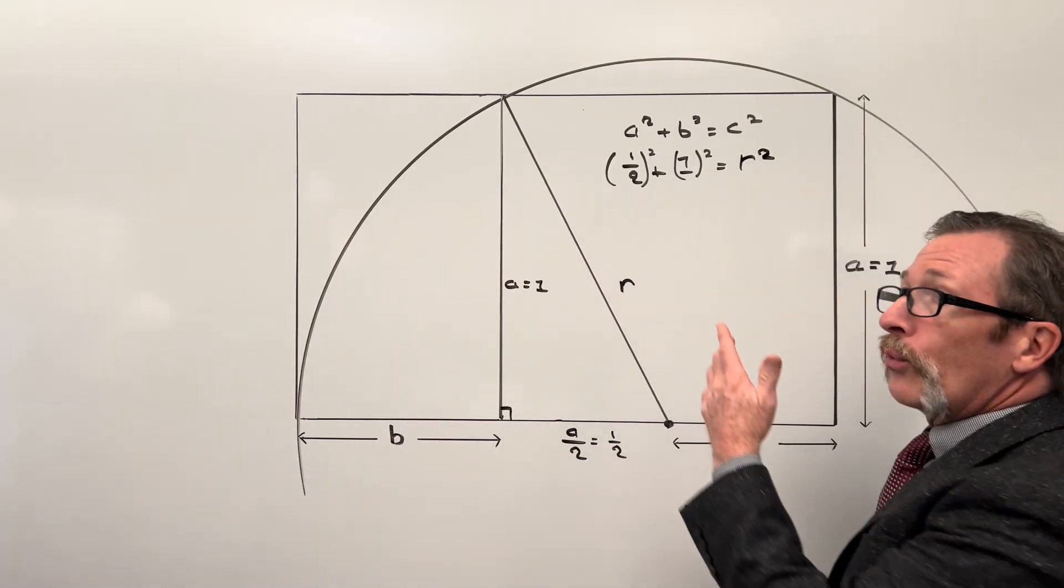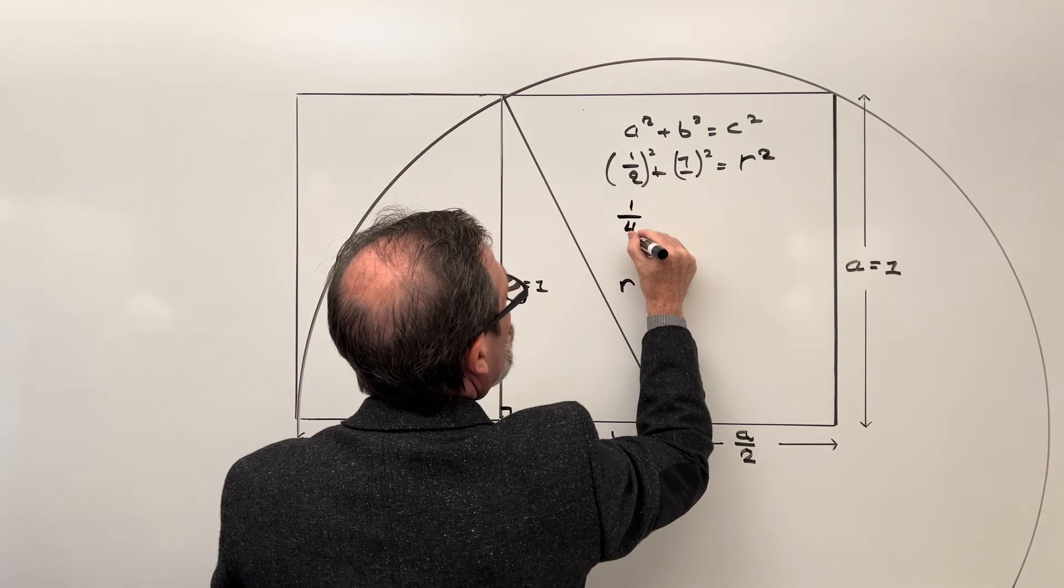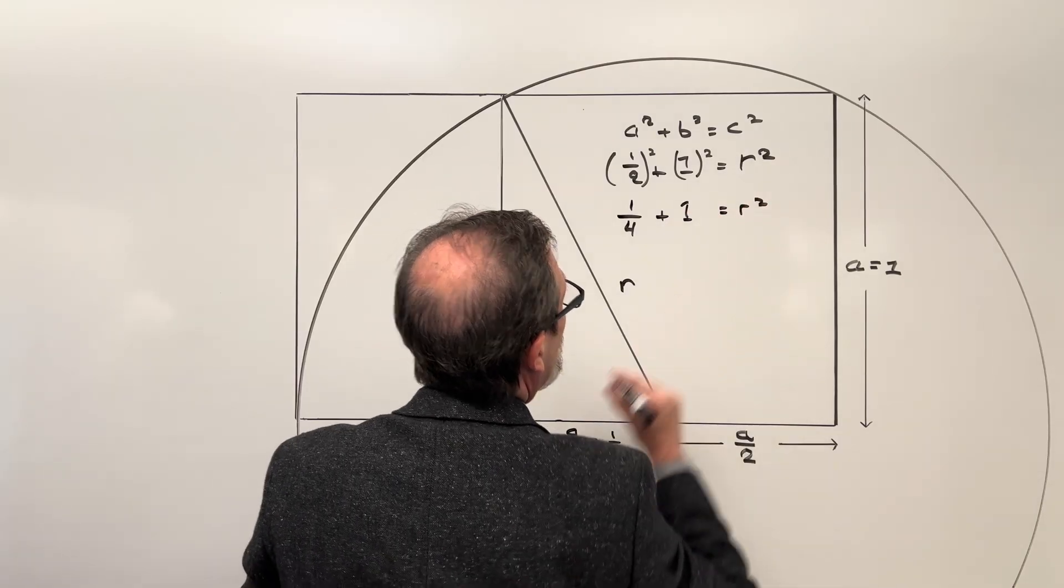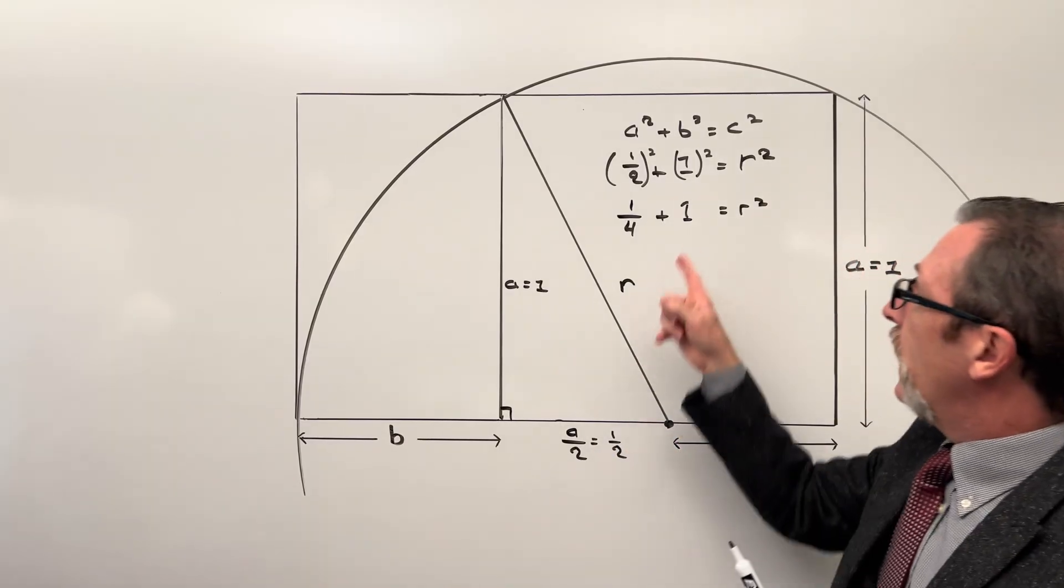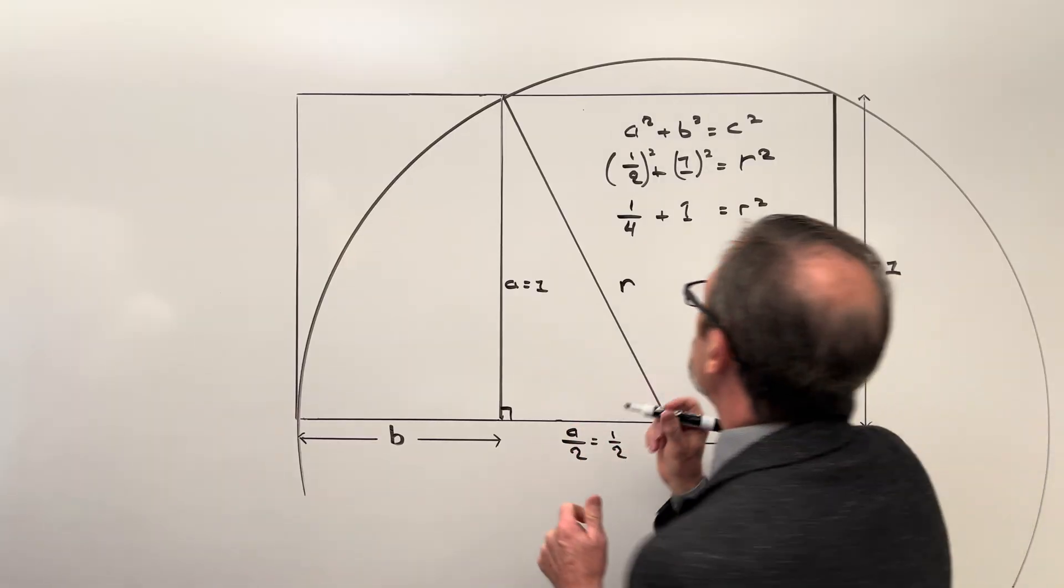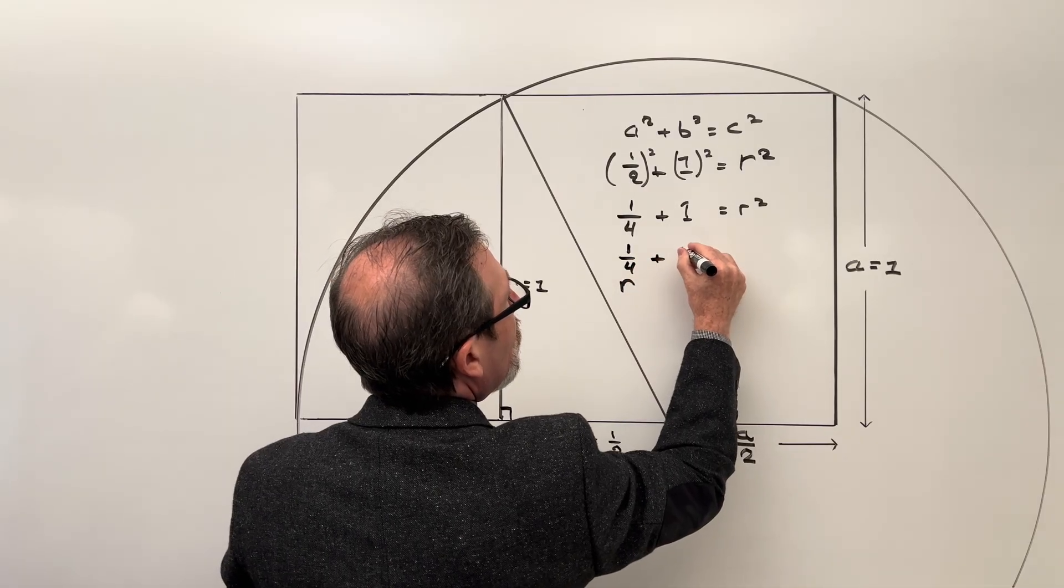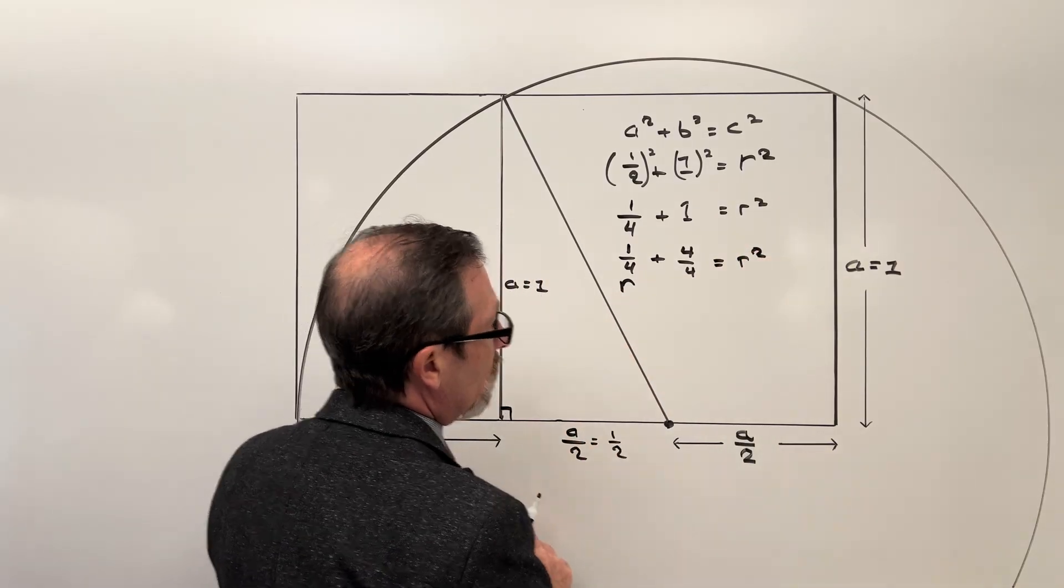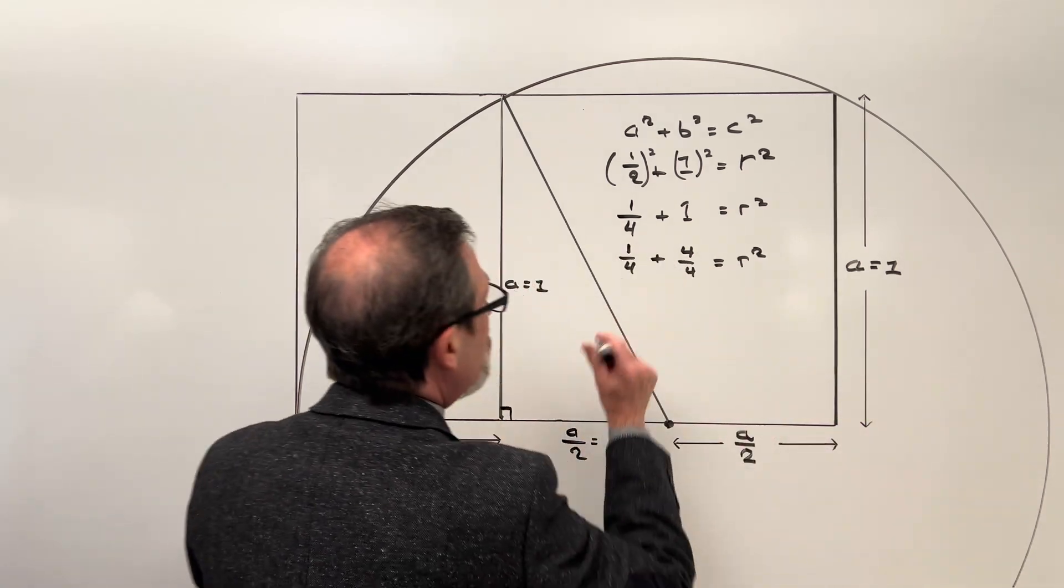Most of them are going to be able to square 1 half and they'll end up with 1 all over 4 plus 1 equals R squared. Now in this case they might get stuck for a second. Remind them that they could end up making the number 1 into 4's also or 4ths. It's 4 fourths. So we can say 1 fourth plus 4 all over 4 must equal our R squared. That R is a little bit in the way. I'm going to move it to the side over here for right now.